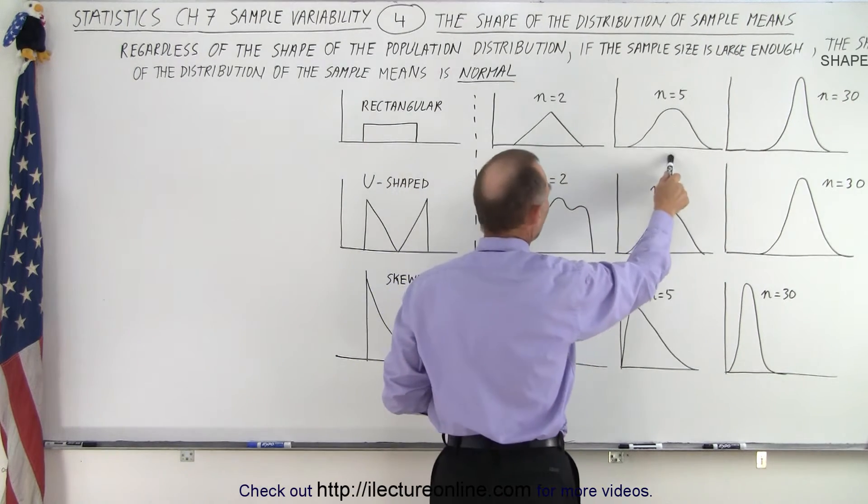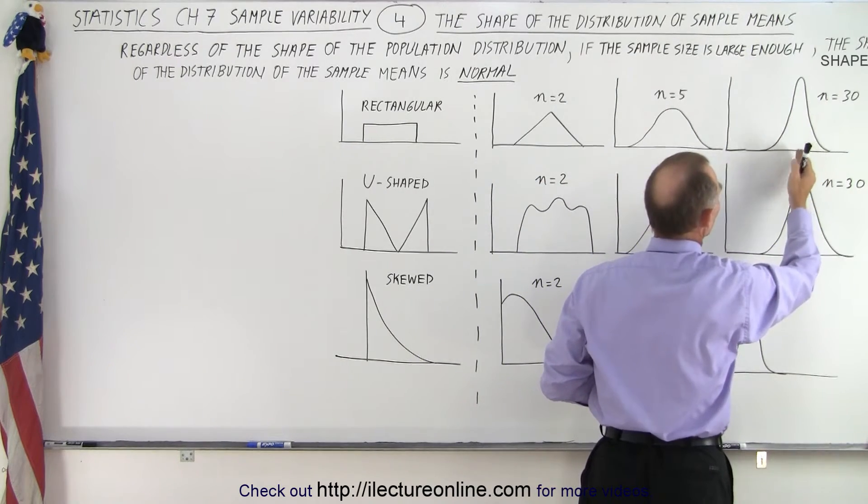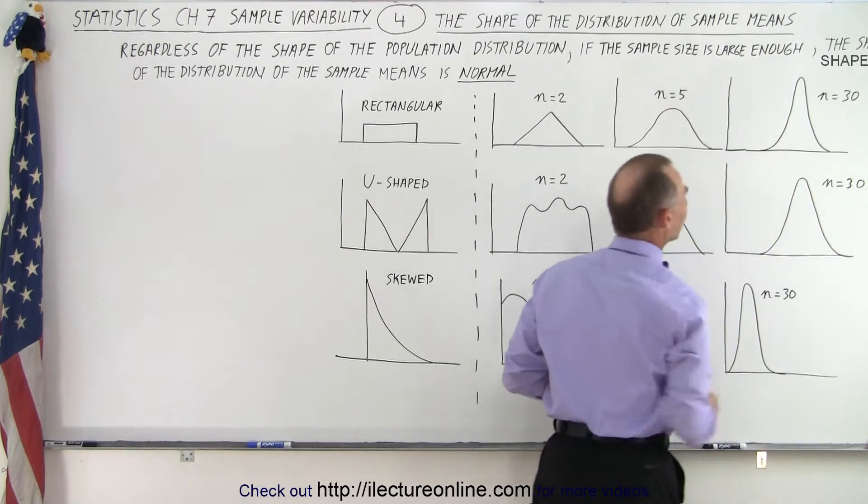Notice when we get n equals 5, it looks a lot more like a normal distribution. And when n equals 30, we have a well-defined normal distribution with a well-defined means, average of the means of the samples.